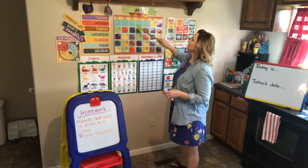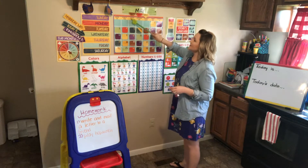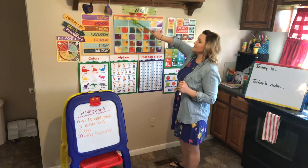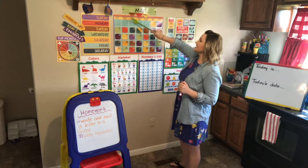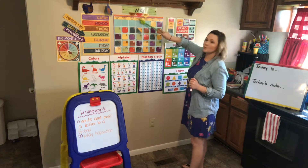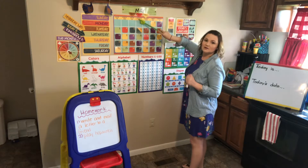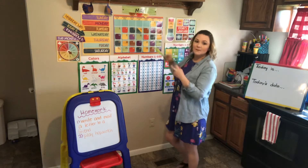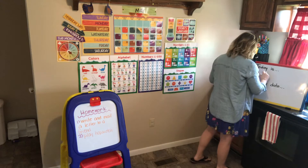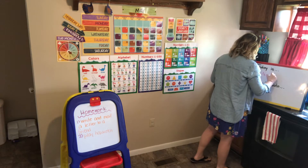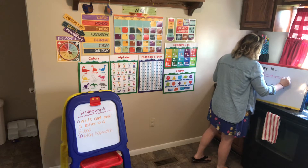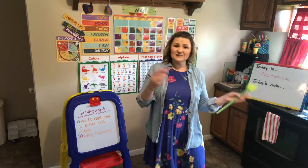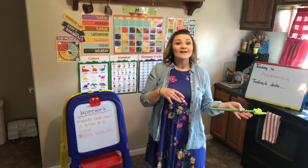We're going to go ahead and start on our calendar. Yesterday was — and this word starts with a T. Sunday, Monday, Tuesday. Good job. So yesterday was Tuesday, so that means today is W. You hear what sound? W. And what letter is that? W, so it is Wednesday. So today is Wednesday. If yesterday was Tuesday, today is Wednesday, tomorrow will be Thursday.